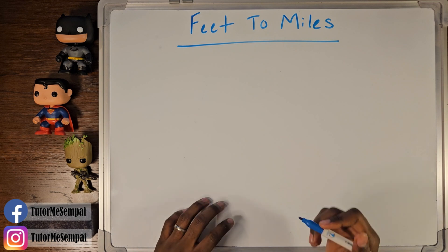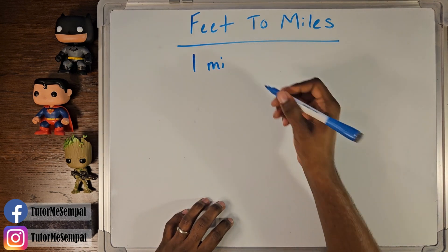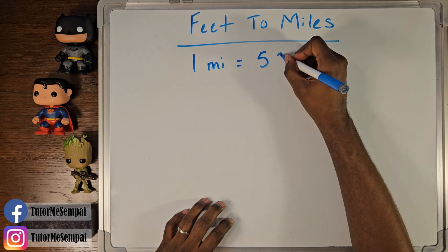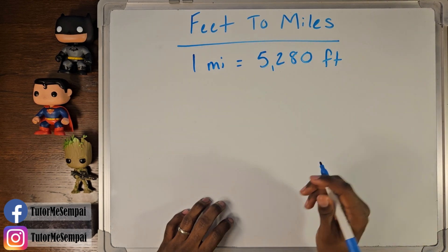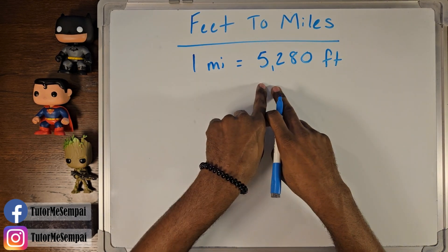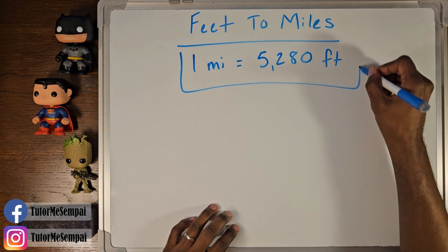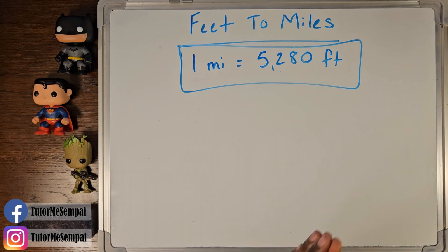So the basic unit conversion for this exercise is going to be one mile equals 5,280 feet. One mile is going to be 5,280 feet. This is our basic unit conversion when we're converting from feet to miles and miles back to feet.